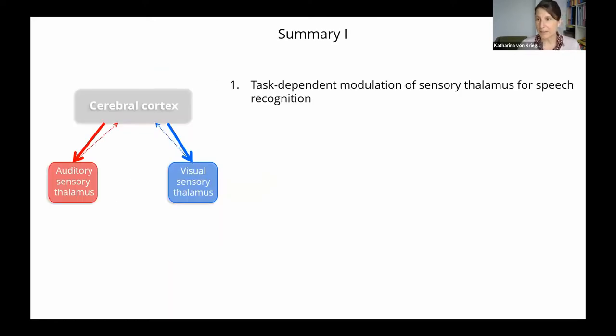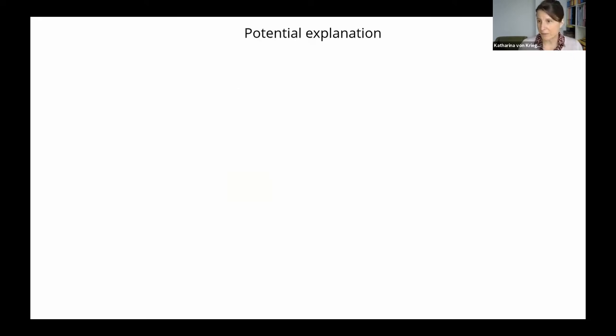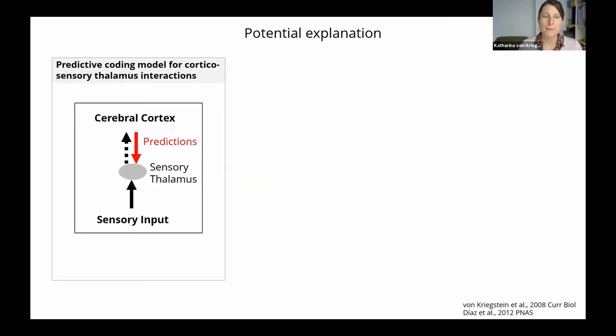So a quick intermediate summary. There's a task-dependent modulation of sensory thalamus for speech recognition. So one question is, of course, how do we explain this? What is the computational mechanism behind it? And our working model currently is this one.